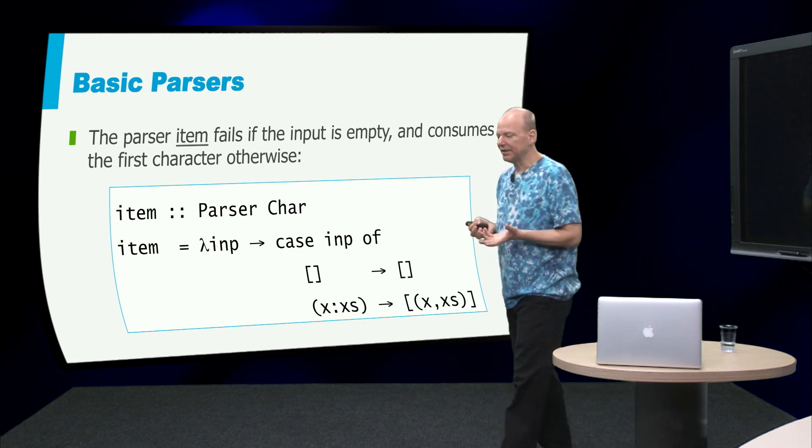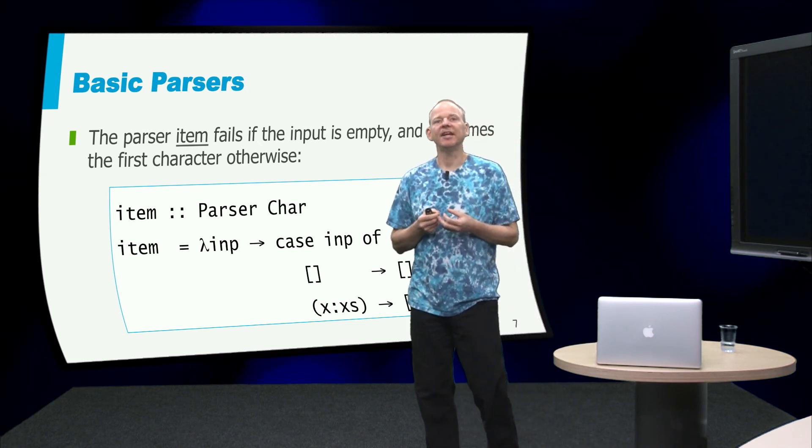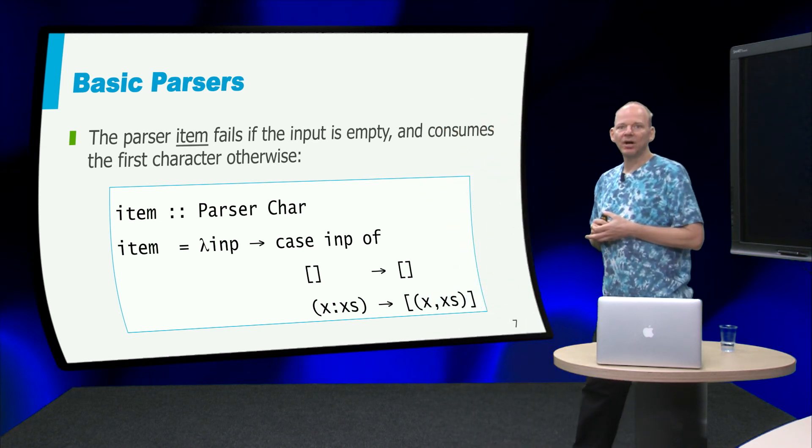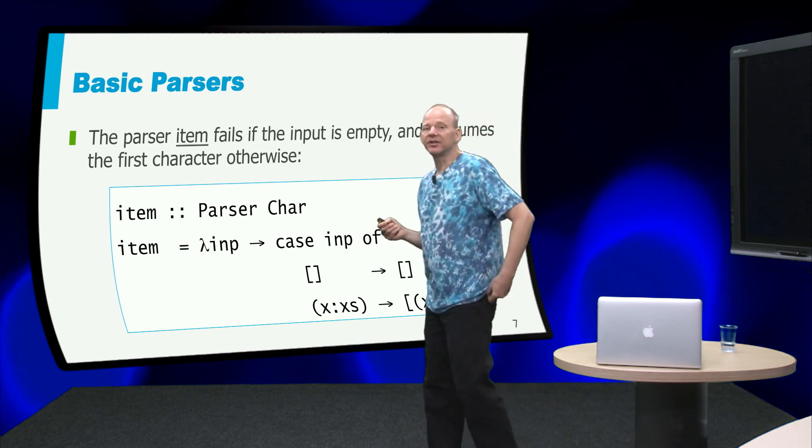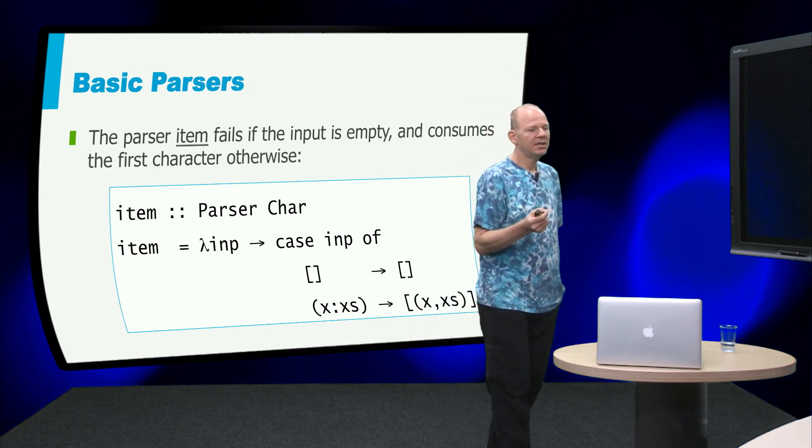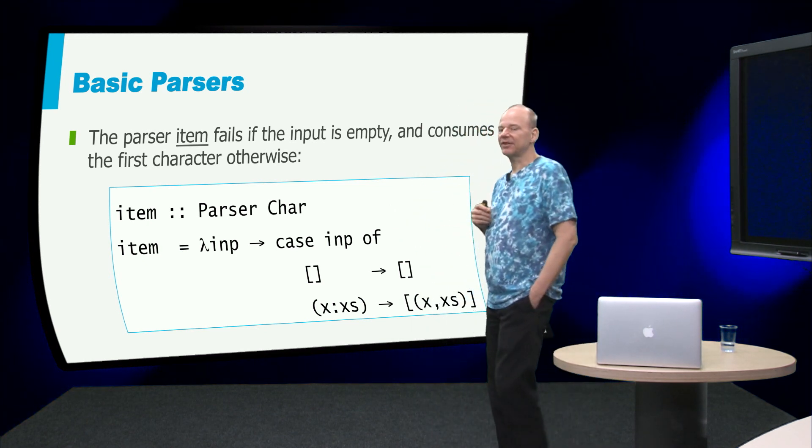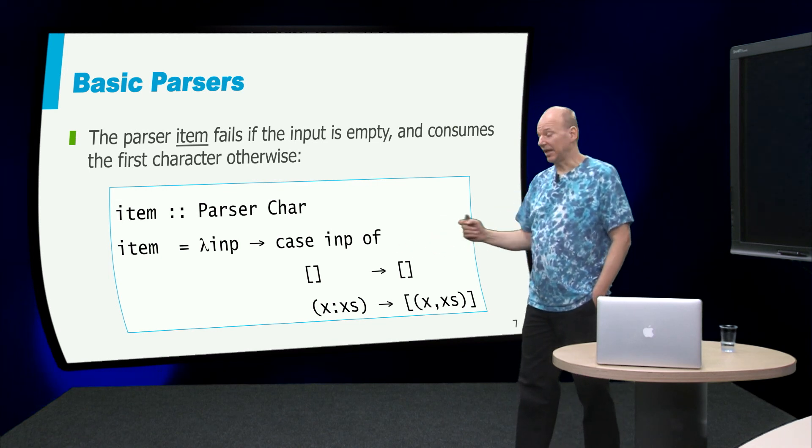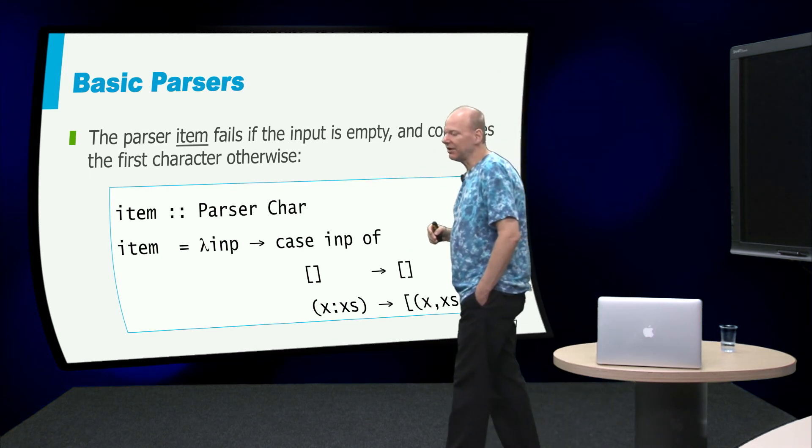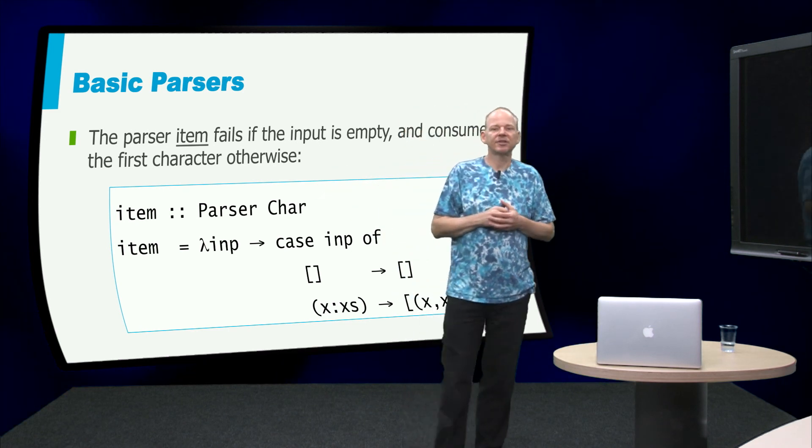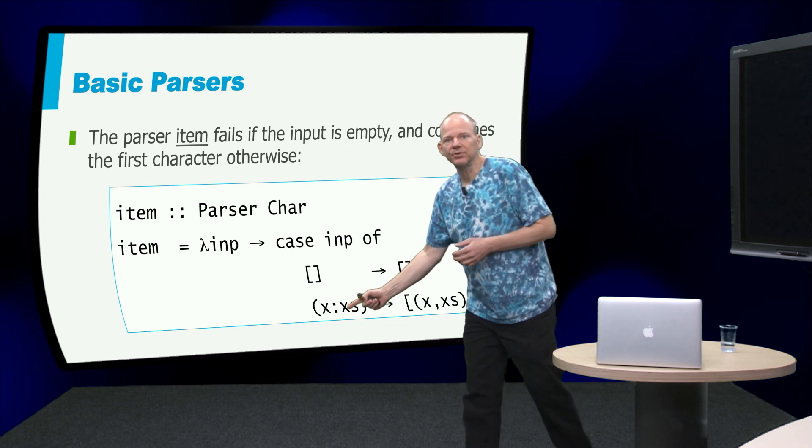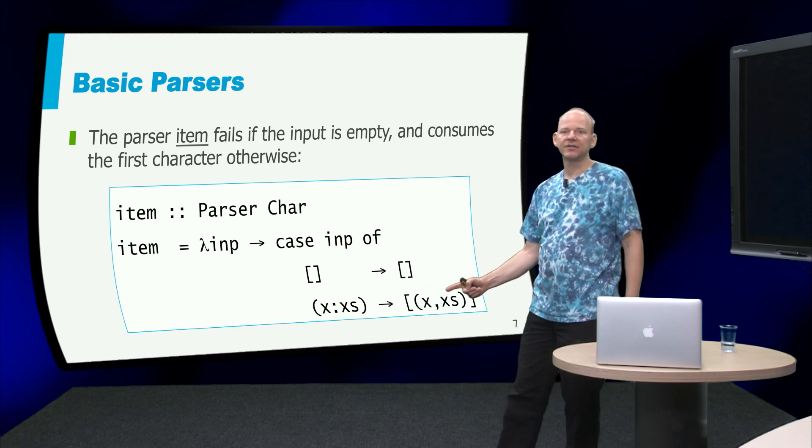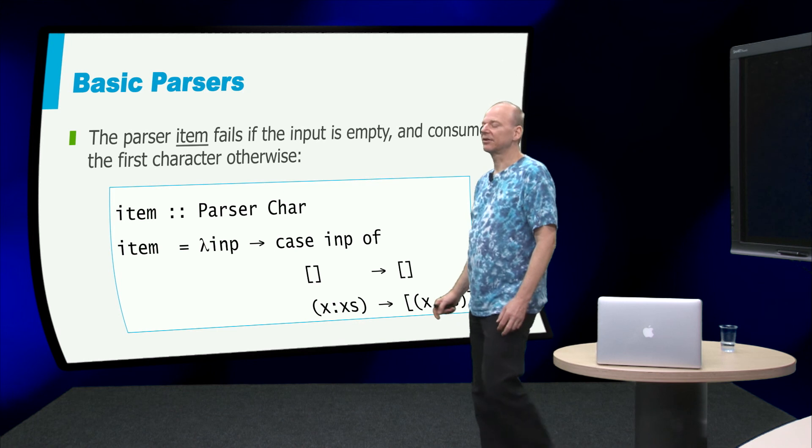Now, in order to build complicated parsers, what we are going to do is we are going to first create simple parsers. And here is the simplest parser that we can imagine, that will just parse a single character. So this is a parser that will take a string and return a pair of a character and the rest of the string. Now if the input string is empty, then I cannot extract a character from that string, so the only thing I can do is return the empty list. But if the input is of the form x-cons-xs, then I can take the pair of the first character and the rest of the string and return the singleton list of the result.